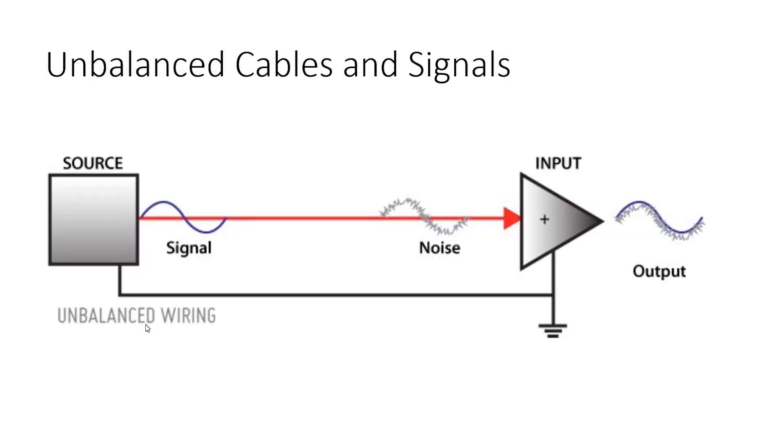Common Mode Rejection Ratio — CMRR. Dear listener, this part will be a bit technical, but I recommend focusing for 5 minutes. If you are interested in audio, it is critically important to understand balanced and unbalanced connection principles at a basic theory level. Let's begin with unbalanced cables and signals.